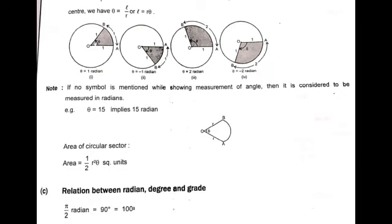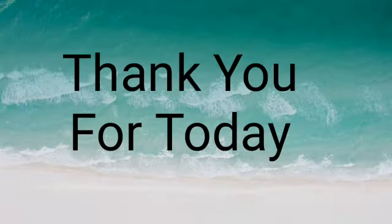The relation between the three systems for measurement of angles is: π/2 radians = 90 degrees = 100 grads. Using this concept we will solve some questions so that the concept is clear. Thank you for today.